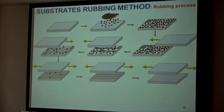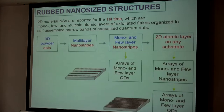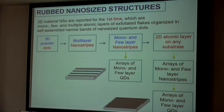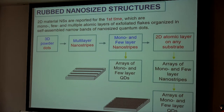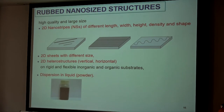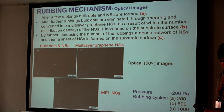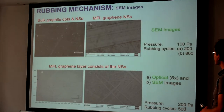After further rubbing, we will have a few layers, and then monolayer graphene. And not only graphene — here we can have other two-dimensional materials if we use other powders. The process goes from three-dimensional powder dots to multilayer nanostripes, then a few layers, and then monolayer. Monolayer and few-layer sheets consist of quantum dots and nanostripes, and we can get different lengths, widths, heights, densities, and shapes of nanostripes. Here we can see optical images of nanostripes and sheets.